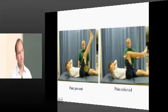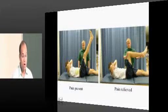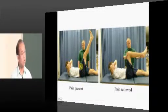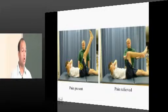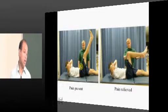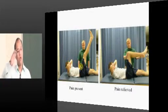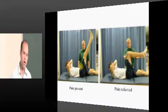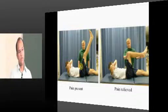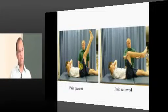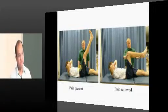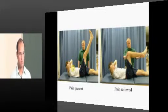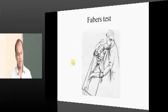The straight leg raising and Lasègue tests are for L3, L4, L5, and S1 — the sciatic distribution. To test the femoral nerve — L2, L3, and L4 — you must stretch the femoral nerve by doing extension of the hip joint. Ask the patient to lie prone and extend the hip joint; the femoral nerve is stretched, and if L2, L3, or L4 roots are compressed, you will have symptoms. This is the femoral nerve stretch test.